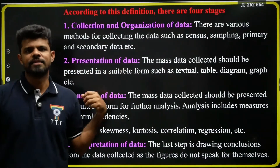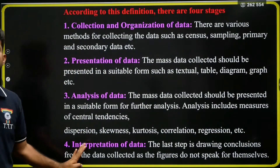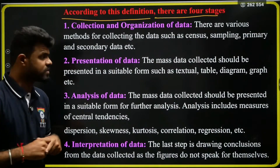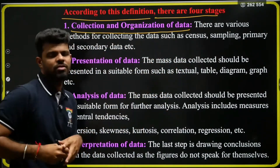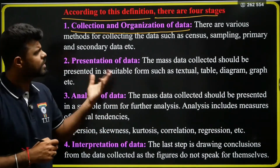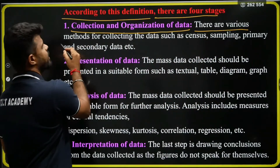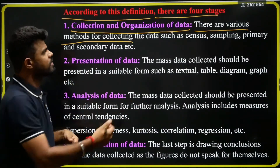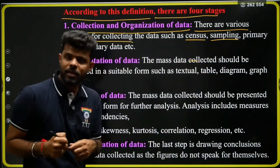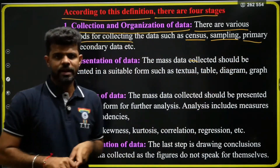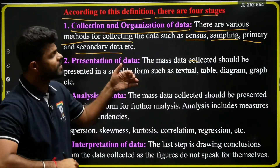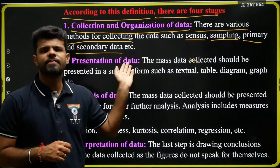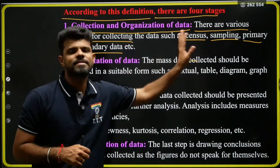According to the singular sense definition, there are four stages. The first stage is collection and organization of data. There are various methods: census method, sampling method, primary data collection, and secondary data collection. Census enumeration method means complete enumeration of each and every unit in the population — for example, collecting data from all students in a class. In India, a census is conducted every 10 years, covering every single family without exception.